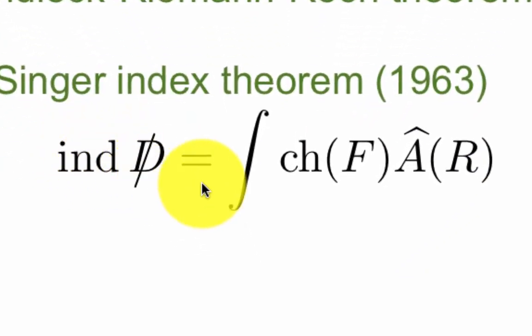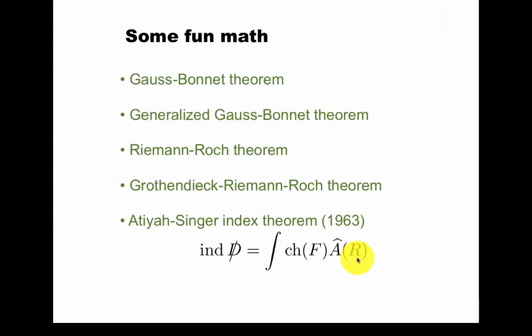In mathematics, the index of the Dirac operator is integral of the Chern class of the vector bundle times the A-roof genus of the curvature, but this is not necessary to understand in detail right now.